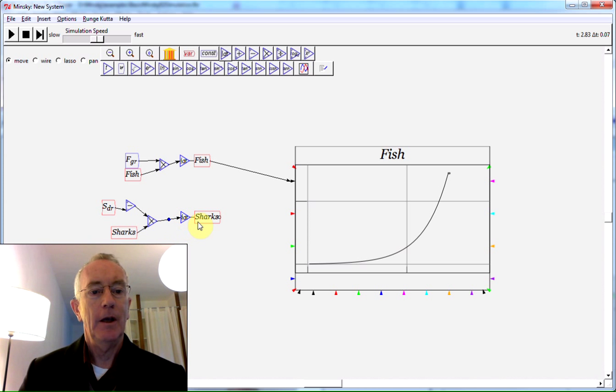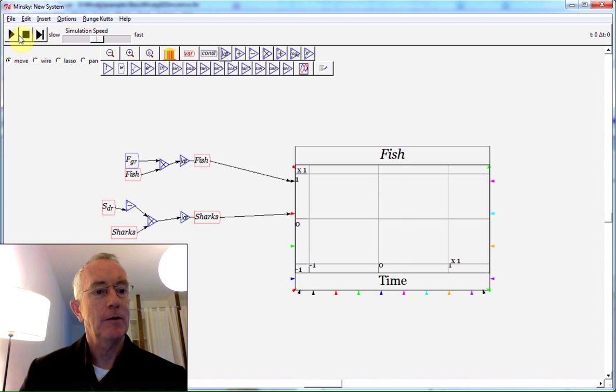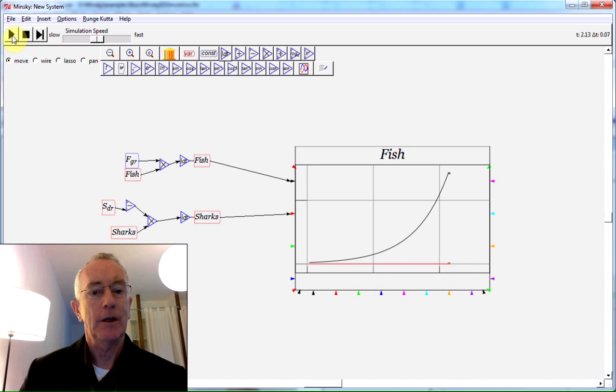I could graph it on the same scale as here. Let's do that - stop the system and graph it. Of course, one's going down to zero, the other's going to infinity. It's actually probably better - let's delete that line.